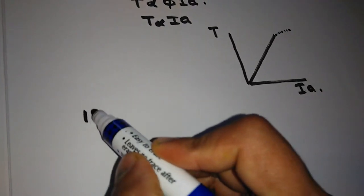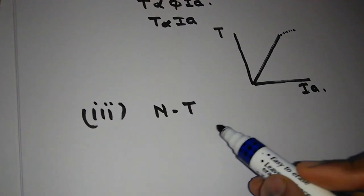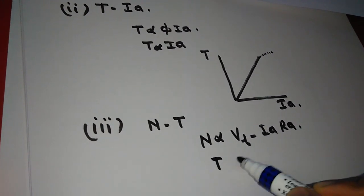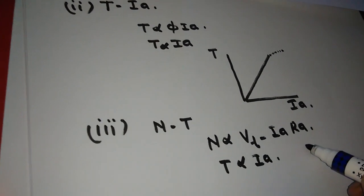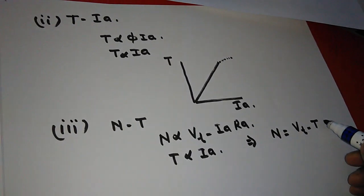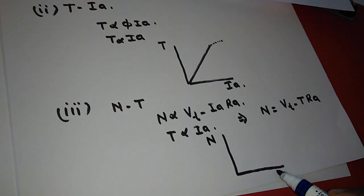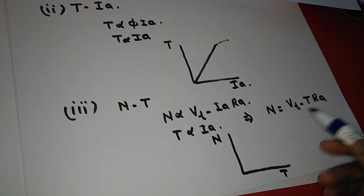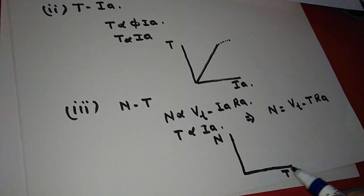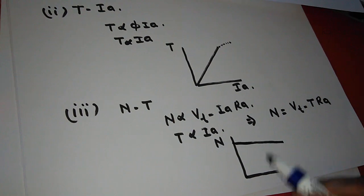Now we will see the third characteristic of DC shunt motor — speed versus torque. Again we use the speed equation: N is proportional to Vt minus IaRa. From the torque equation, T is proportional to Ia. So we can establish a relationship: N is equal to Vt minus T·Ra. When torque is zero, speed is maximum, and as torque increases, speed decreases — this is also a drooping characteristic.